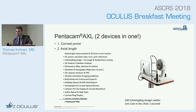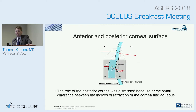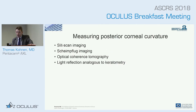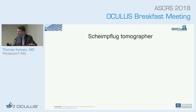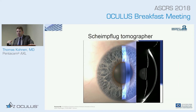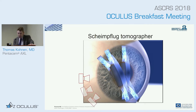Jack pointed out the report nicely, but I will go to the background of what we have done over time. The role of the posterior cornea was dismissed because of the small difference between the indices of refraction of the cornea and aqueous, and we had no option to measure the posterior corneal surface. I want to highlight the Scheimflug imaging device — a Scheimflug tomographer. This is the schematic drawing of the Pentacam, which takes a measurement of the anterior chamber. It works by taking a lot of slits and putting the picture together.